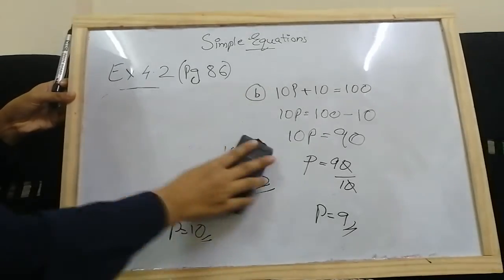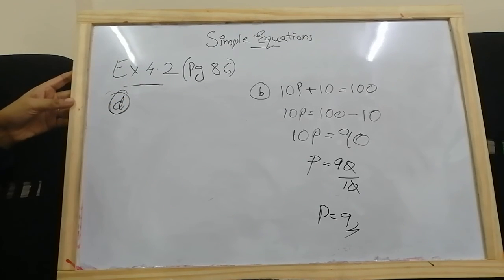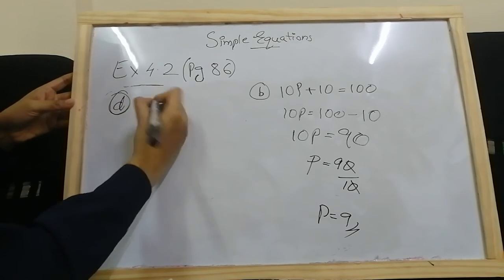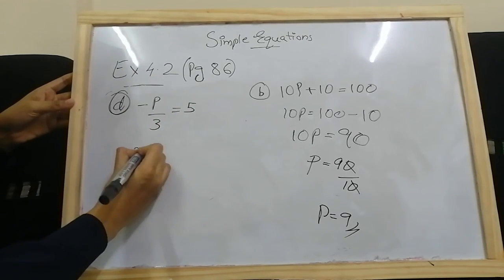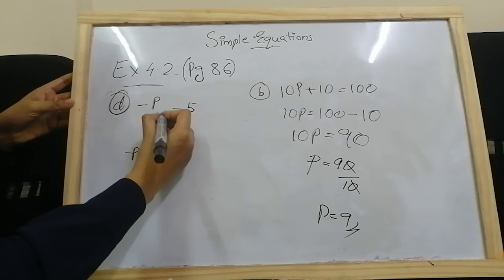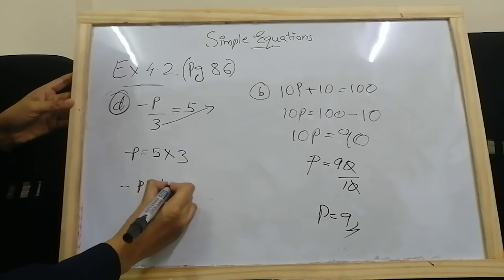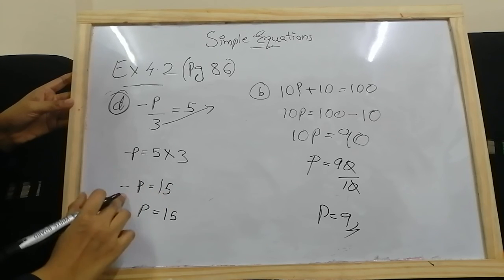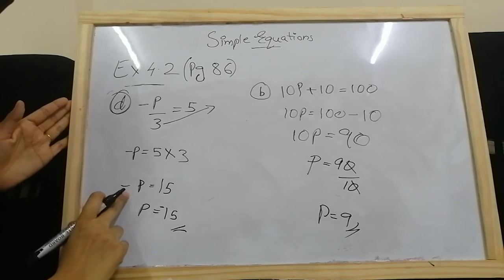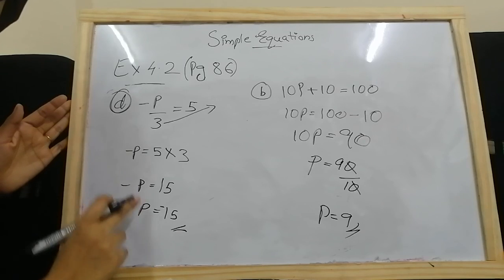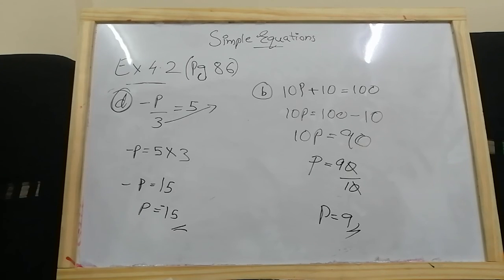Sub-question d: minus p by 3 equals 5. Take numbers together: minus p equals 5 into 3 equals 15 — since it was division, taken after equals it becomes multiplication. So minus p equals 15. The negative sign belongs to the value, not the variable, so p equals minus 15.